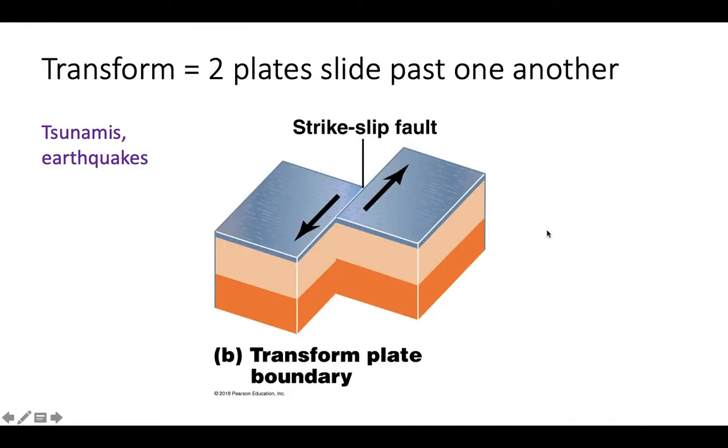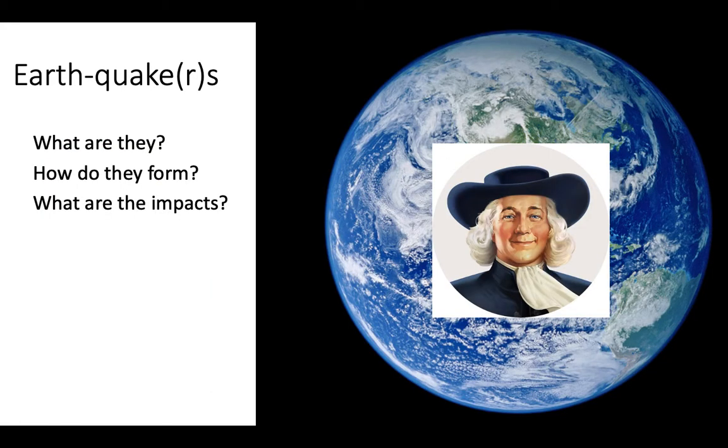And the last boundary is a transform plate boundary. This is when two plates will slide past one another. Kind of like two cars sideswiping each other. And this can lead to tsunamis and earthquakes. The area where they slip by each other is referred to as a strike-slip fault. Say that 10 times fast. And these can lead to earthquakes.